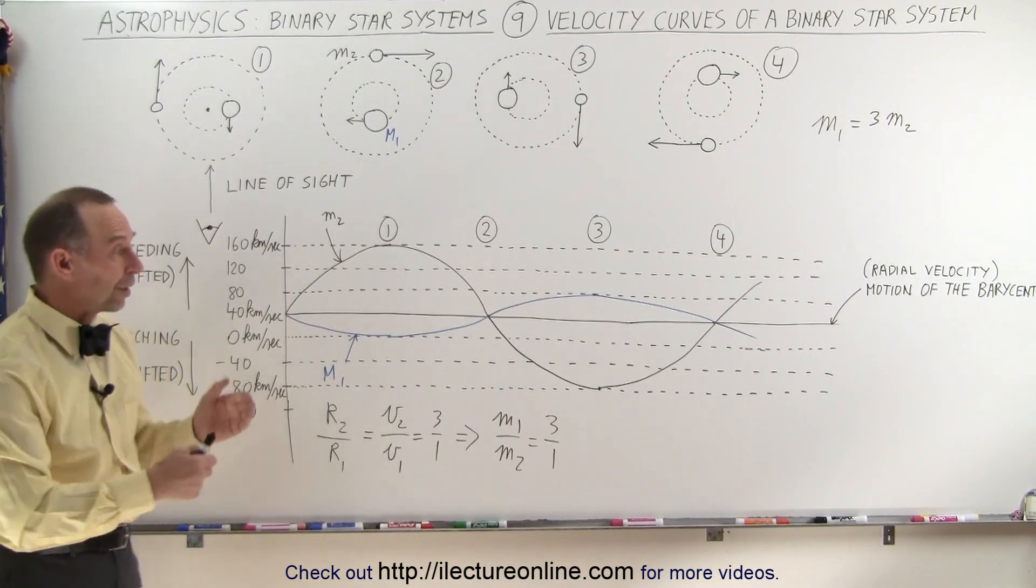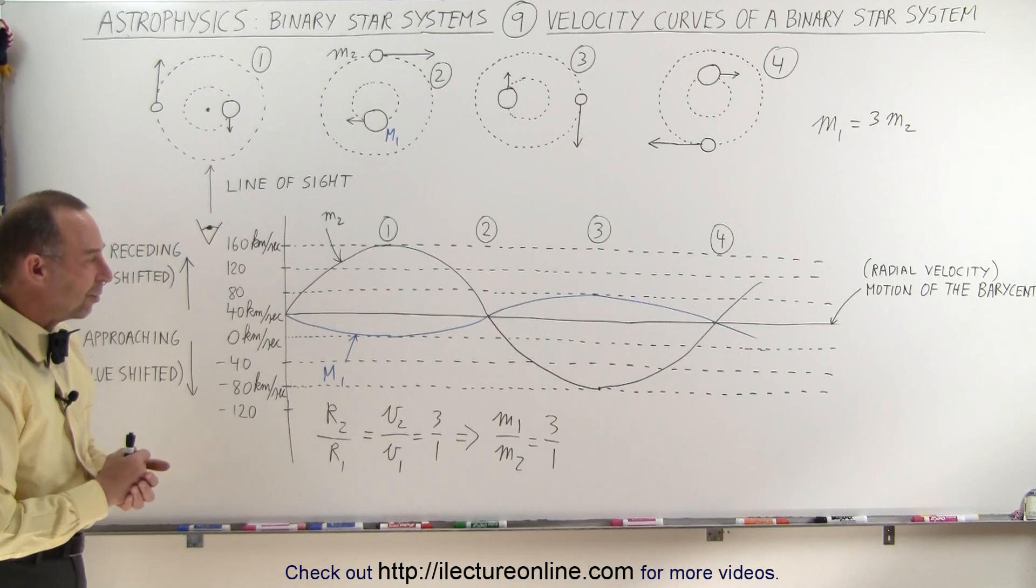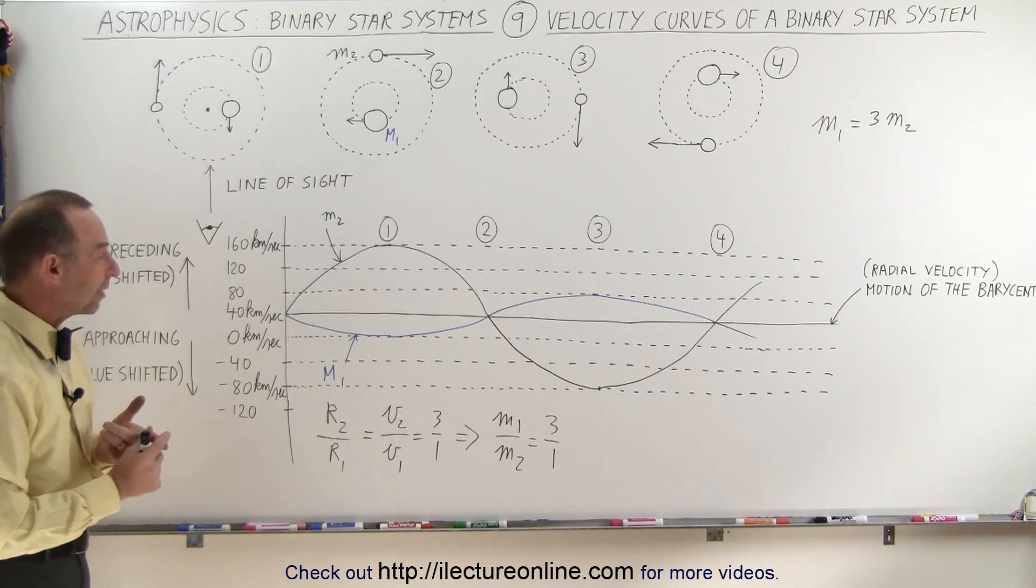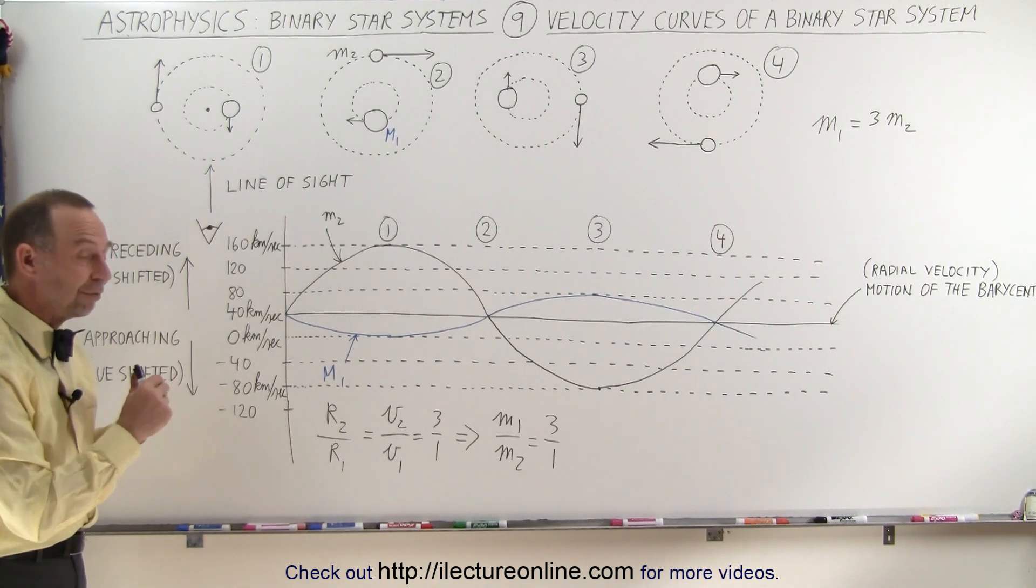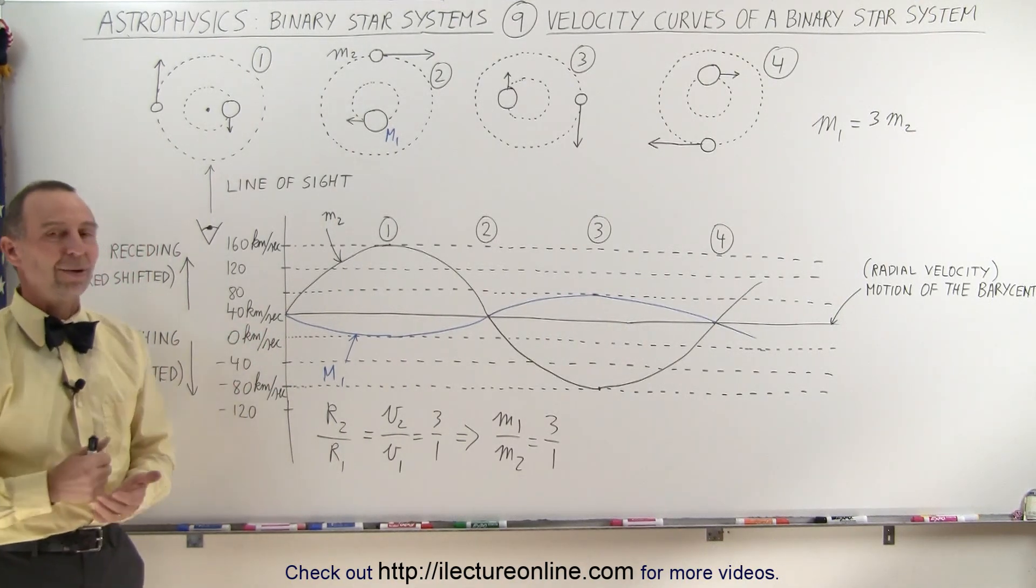And that's how we discover quite a few things by looking at the Doppler shifts of a binary star system. We can know their relative masses, we can know their relative velocities and their relative radii from where they're at to the barycenter. And that's how it's done.